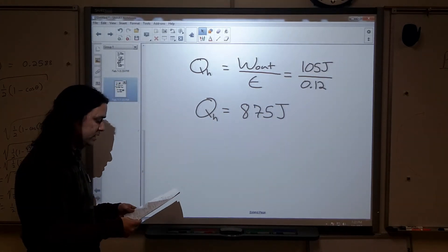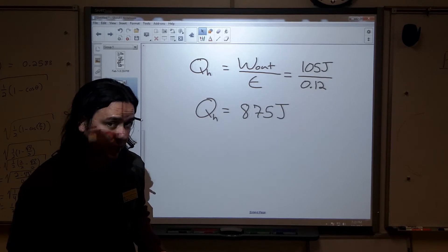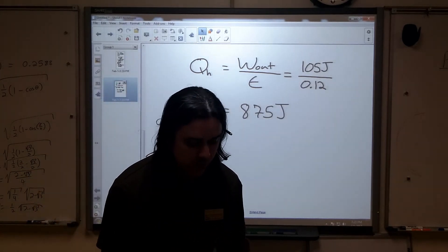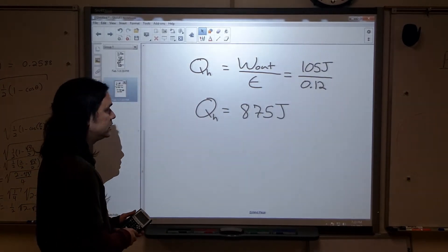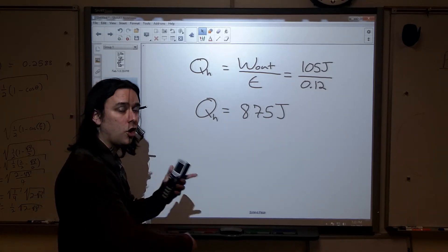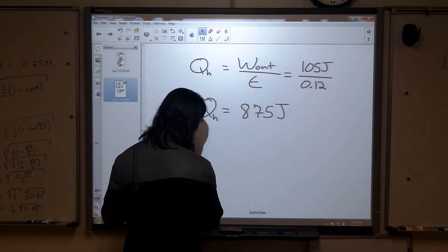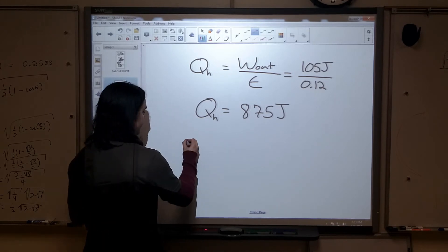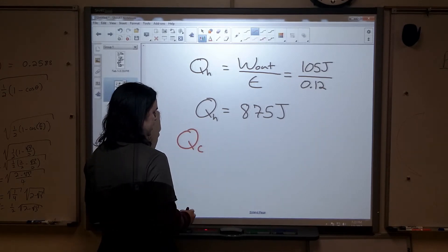Second part of the question says how much heat is rejected in each cycle. That's looking for the heat dumped into the cold reservoir. All right. So what we're looking at then is for Q_C.